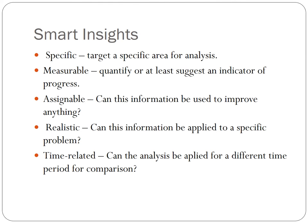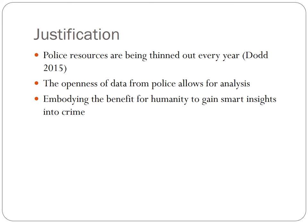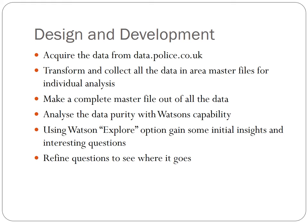The smart insights were developed in part one of the assignment, which I will be using in judging my data sources and the questions I will be asking in relation to the police. The justification for the project is quite simple. As mentioned, police resources are being cut every year, and the openness of police data allows for easy access and analysis. By embodying the benefit for humanity, we will attempt to gain small insights into crime and how reducing funding affected the police and crime in the United Kingdom. Now let's move on to the design and development part of the project.